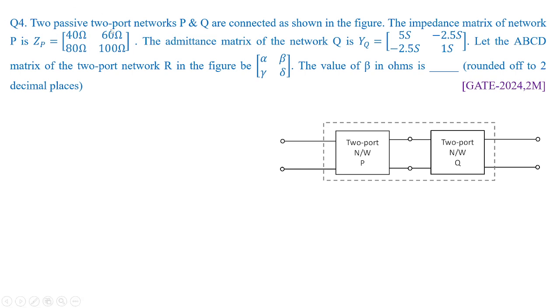Then two passive two port networks P and Q are connected in figure shown. The impedance matrix of network P is ZP that is 40 ohms, 60 ohms, 80 ohms and 100 ohms. The admittance matrix of the network Q is 5 Siemens minus 2.5 Siemens minus 2.5 Siemens, 1 Siemens or mhos you can say and let the ABCD matrix of the two port network be R which is shown in this figure.